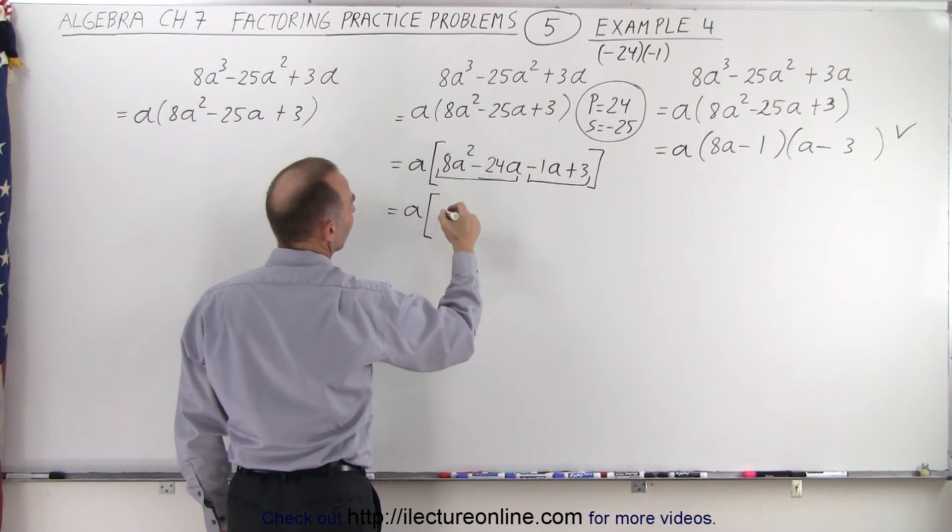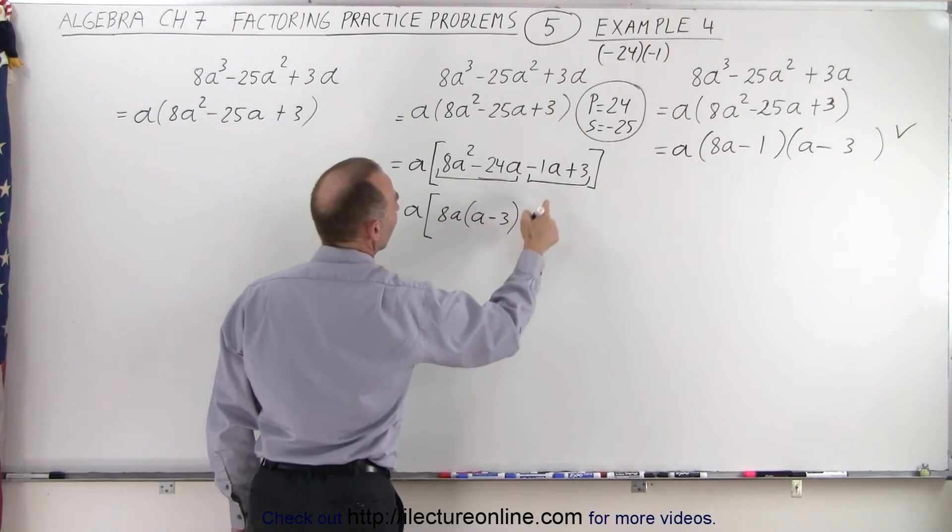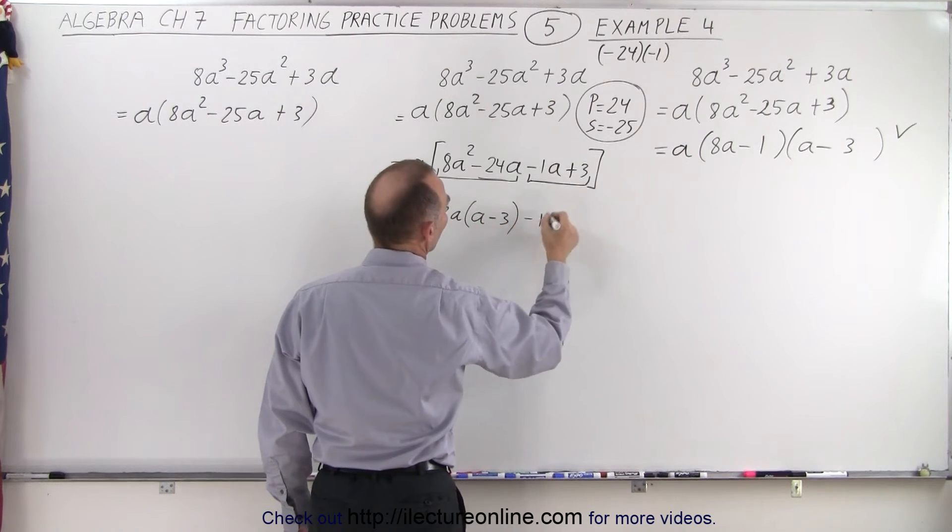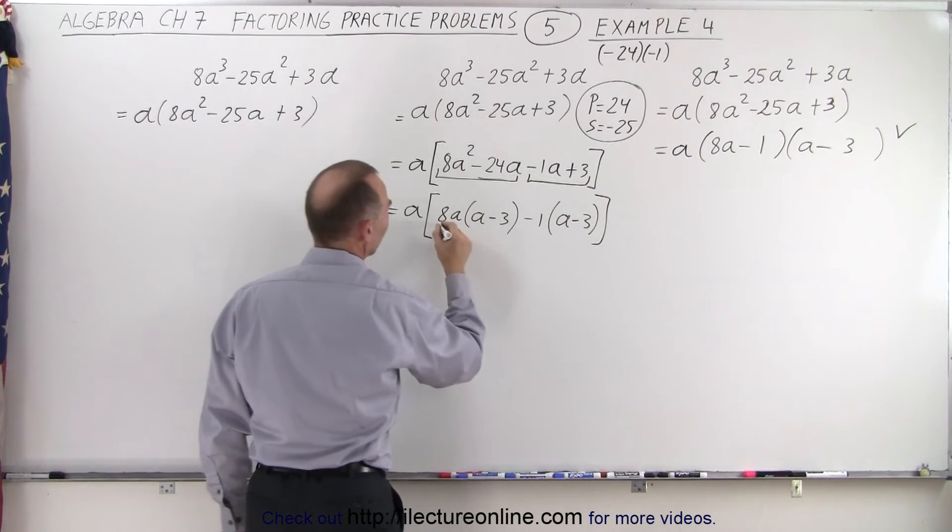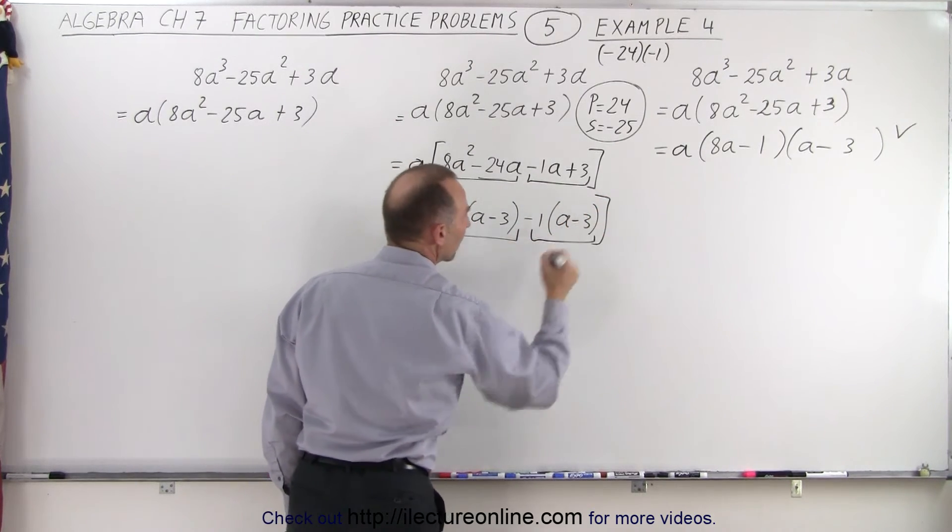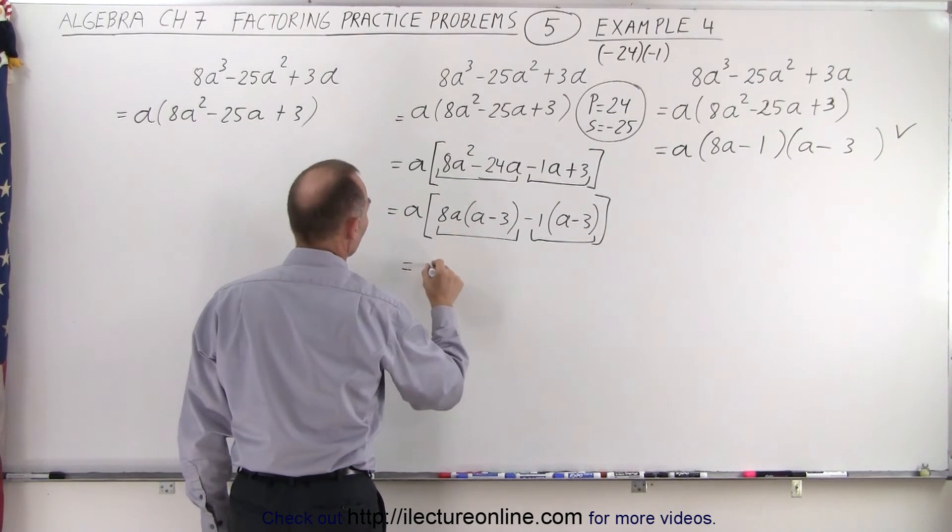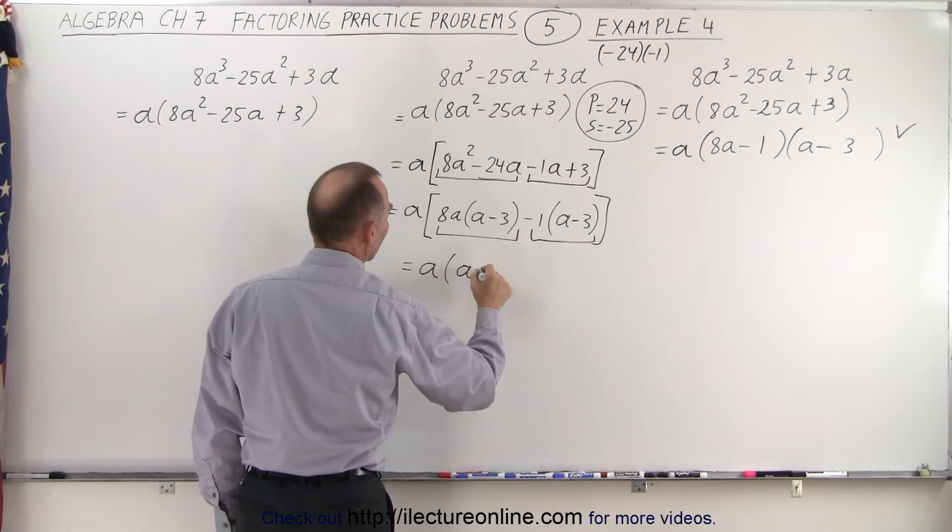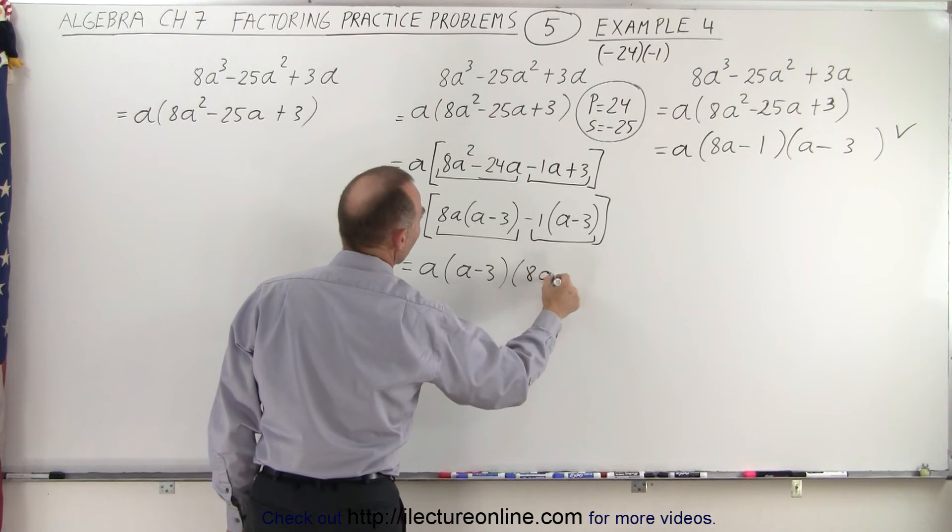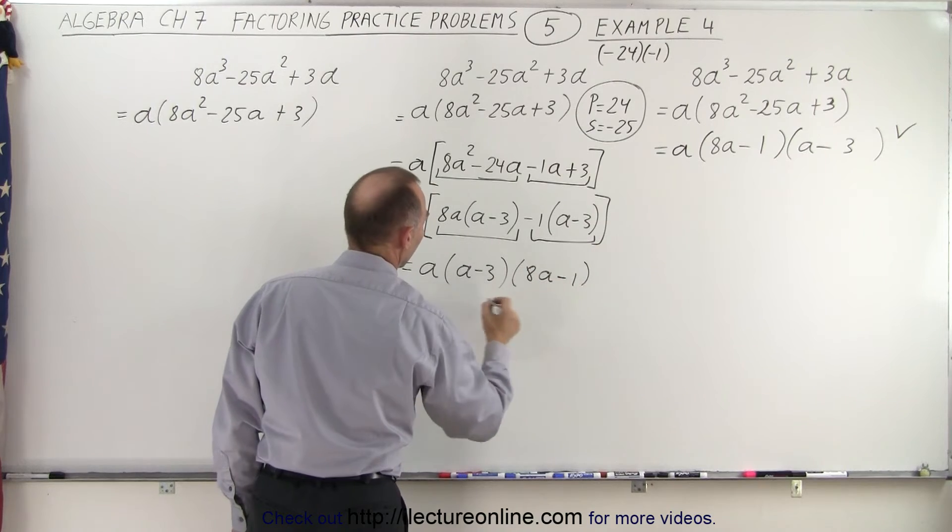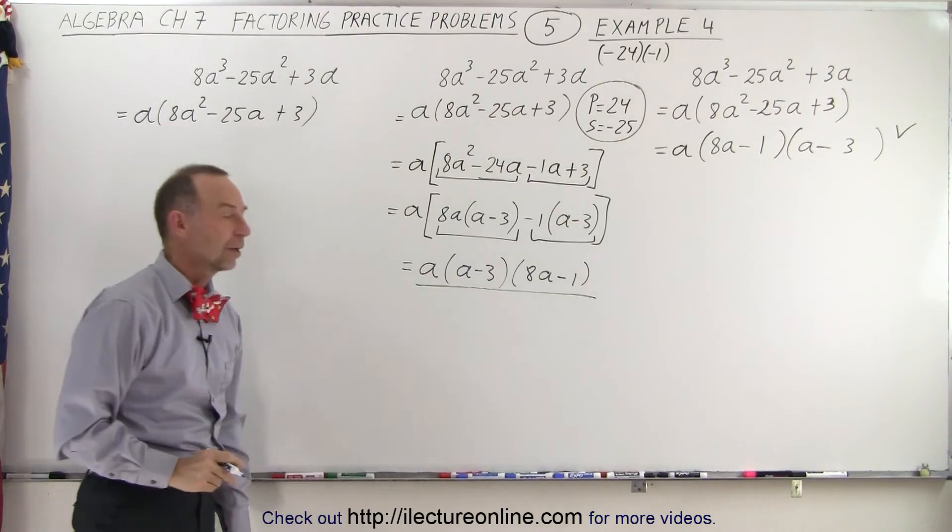So this can be written as a times... Here when I factor out an 8a, I'm left with a minus 3. And here if I factor out a minus 1, I'm left with a minus 3. And then if I look at these two factors, notice I can factor out an a minus 3. So this can be written as a times a minus 3 times 8a minus 1. And that's the factored form of our original problem, just like we had before.